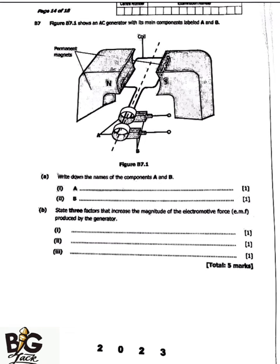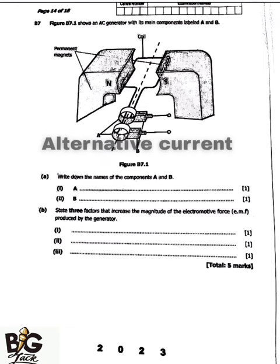The question says figure B7.1 shows an AC generator with its main components labeled A and B. The word AC symbolizes alternating current.